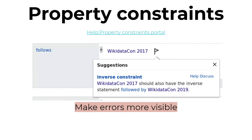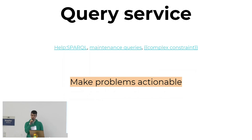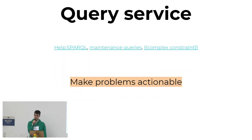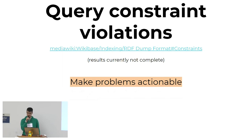If property constraints are too limited or simple for you, you can write any checks you want using the query service, which is useful for lots of things. You can also use it for finding errors — if you've noticed one occurrence of a mistake, you can check if there are other places where people have made a very similar error. You can also combine the two and search for constraint violations in the query service, for example, only the violations in some area or wiki project that's relevant to you.